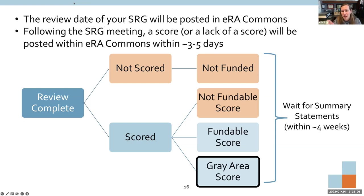As the actual review dates are scheduled, that preliminary date will update in eRA Commons to a specific date. Once that date has passed, within a few days your score — or lack of a score — will be posted. It usually takes about three to five days from the time your study section meets. Once the review is complete, one of two things happens: you're either scored or not scored. If you're not scored, your application is definitely not getting funded.